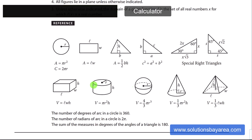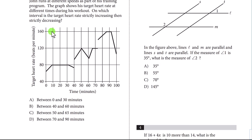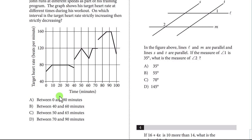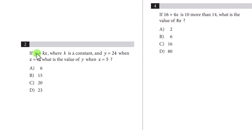Question number one: John's running at different speeds — which interval is the target rate strictly increasing then strictly decreasing? 0 to 30 — nope. 40 to 60 — yes, that looks like it. 50 to 65 — no, that goes down and back up. 70 to 90 — nope. The right answer is B, between 40 and 60.